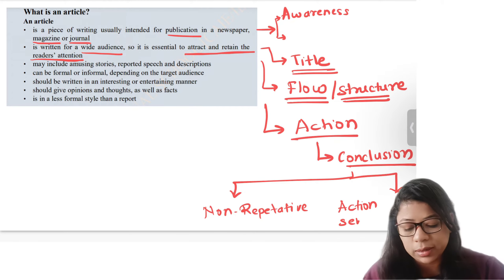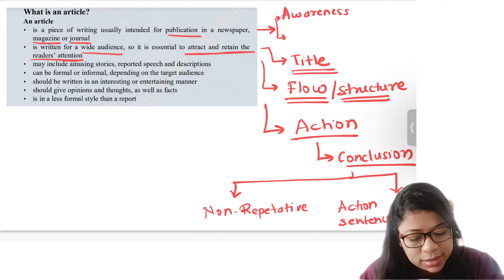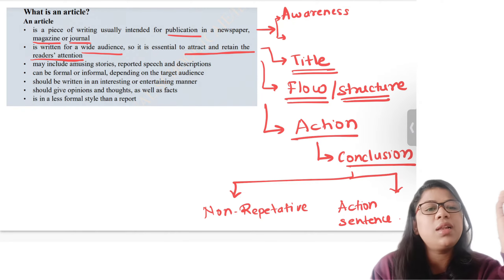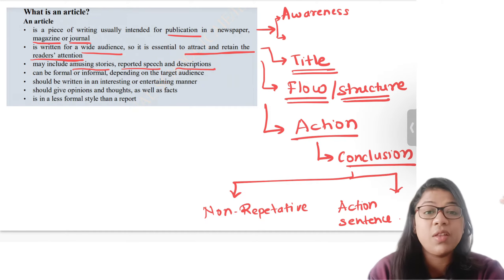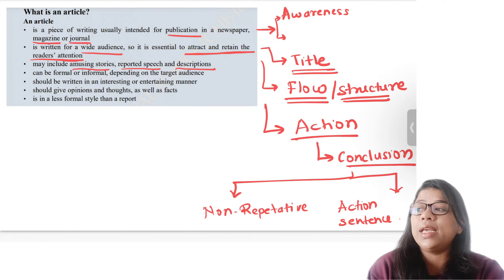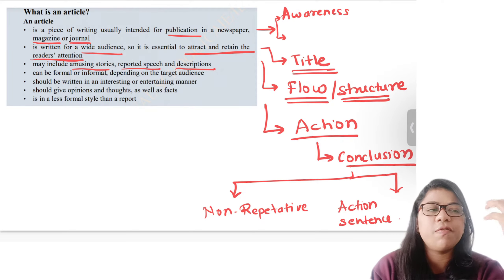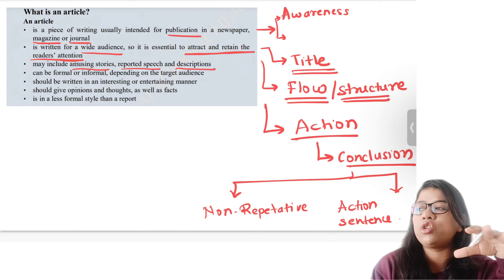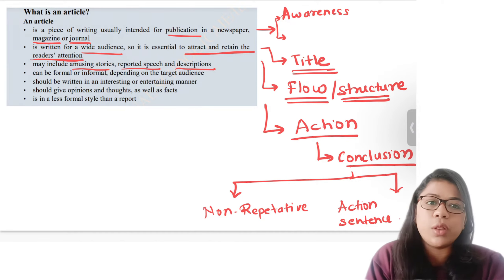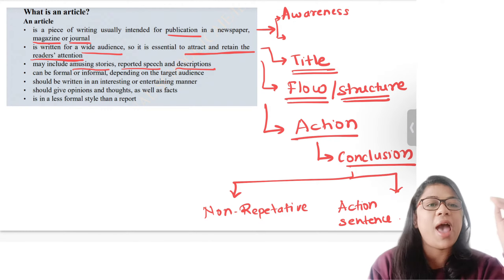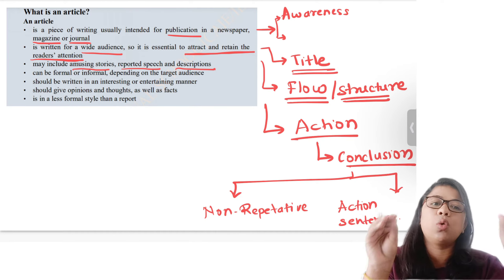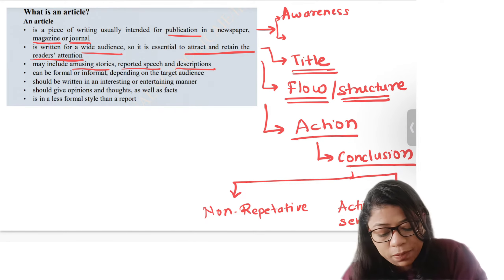An article may include amusing stories, reported speech, or description, because articles are supposed to be very interesting. What makes writing interesting? It contains short, interesting stories that create suspense, mystery, or strong relevance to the audience. Make it as relevant as possible — interesting and relevance go hand in hand. Something which is relevant to you is always interesting.